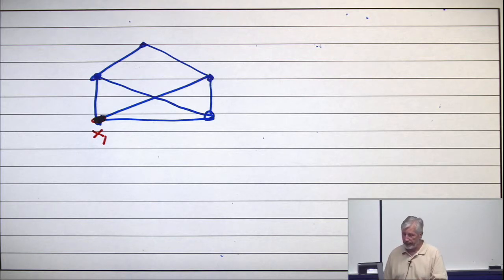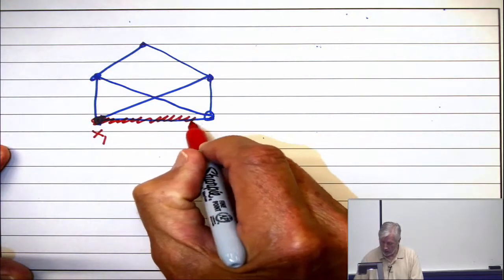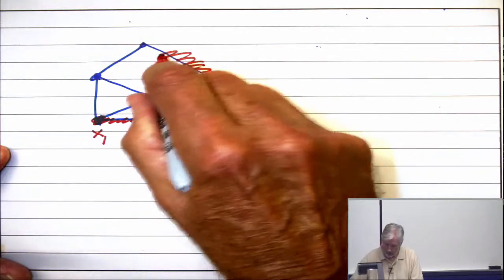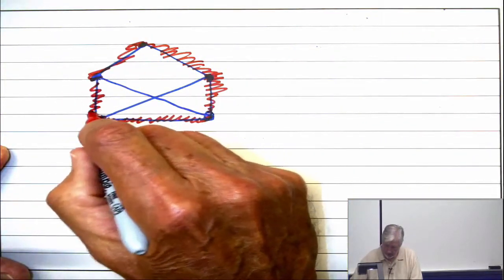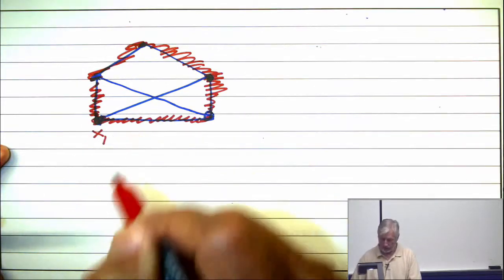These are your magazine problems where you're supposed to trace a figure without ever lifting your pen off the paper but never repeating an edge. So I might go this one, to this one, to that one, to that one, to that one, down to that one. I'm stuck. Couldn't do it.